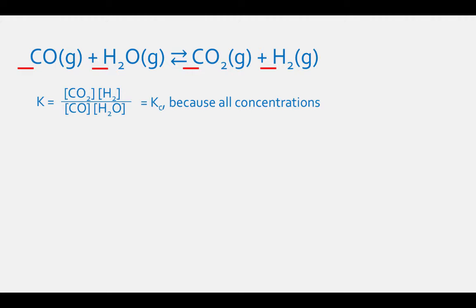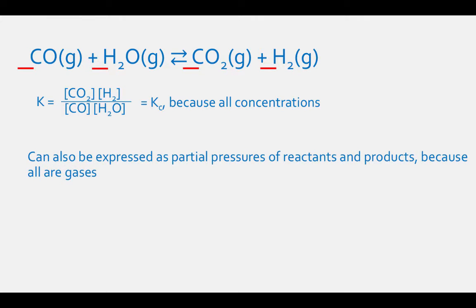This equilibrium constant can also be represented by the partial pressures of the reactants and products because they are all gases. In this case, the equilibrium constant Kp equals the partial pressure of CO₂ times the partial pressure of H₂ divided by the partial pressure of CO times the partial pressure of H₂O.